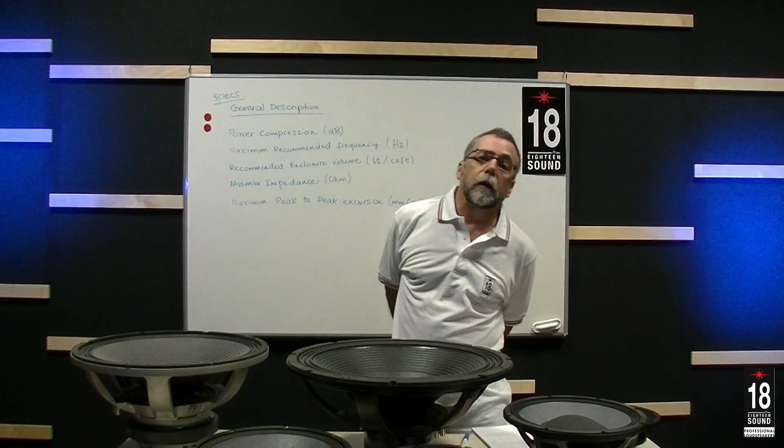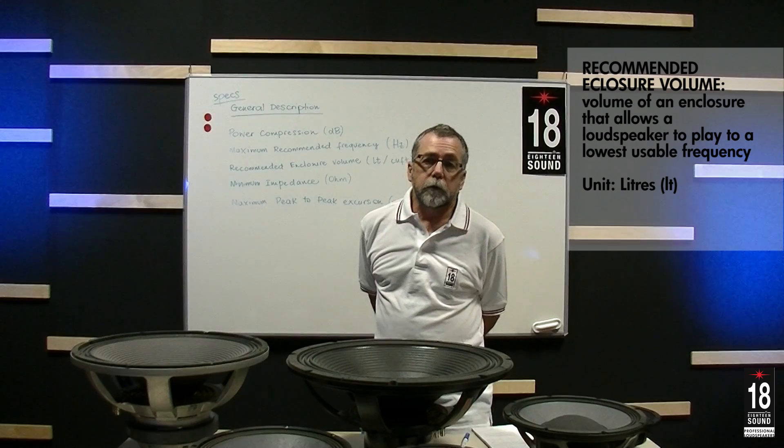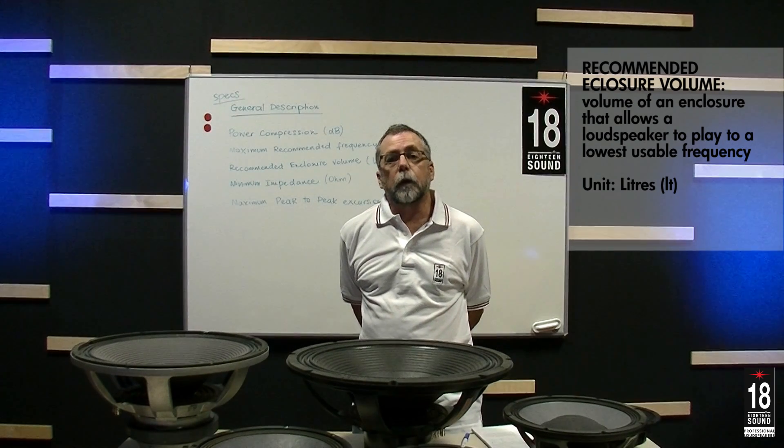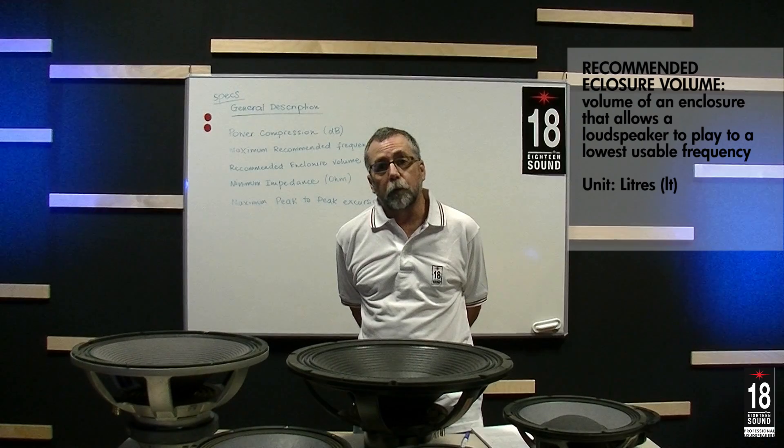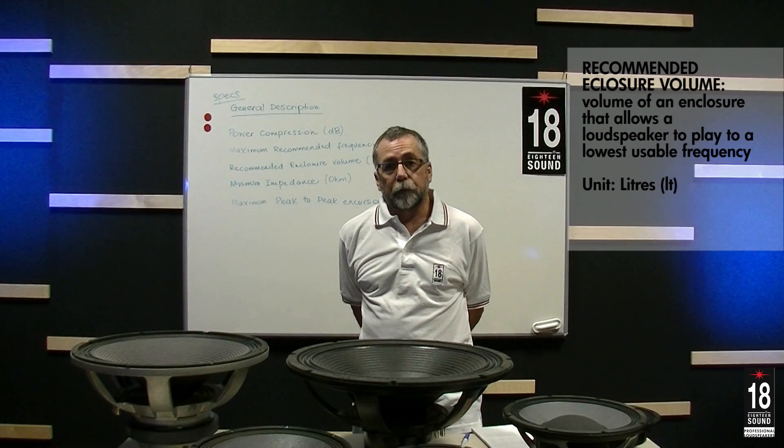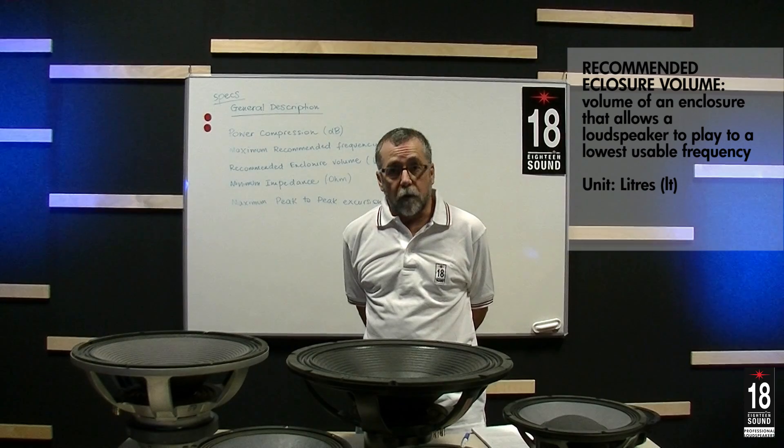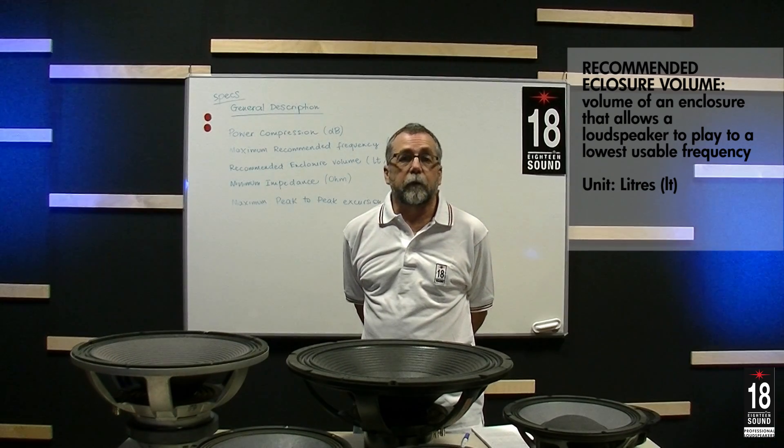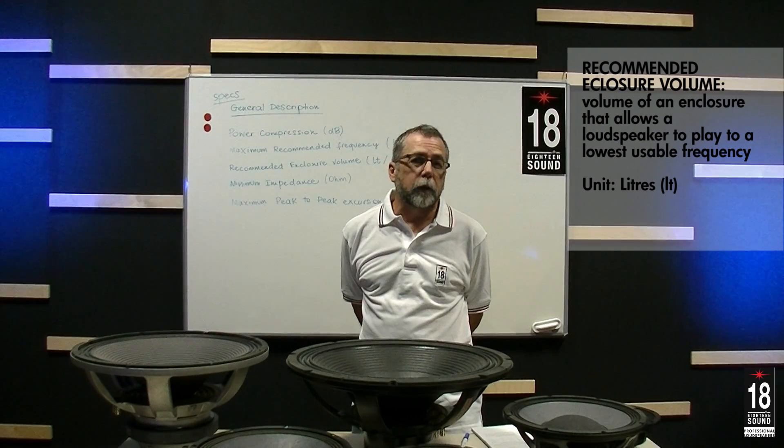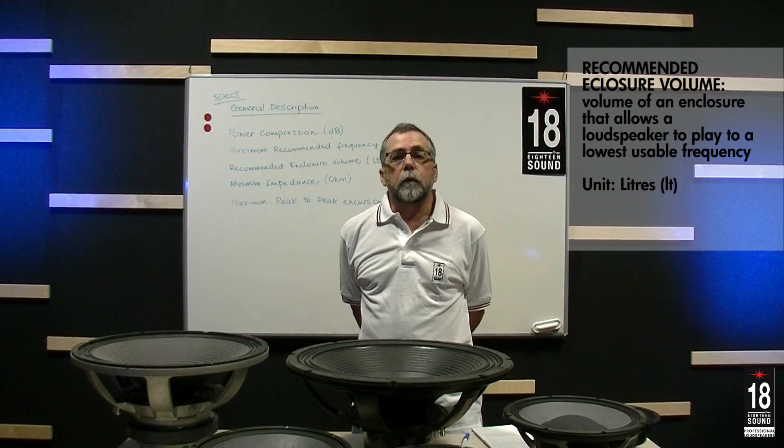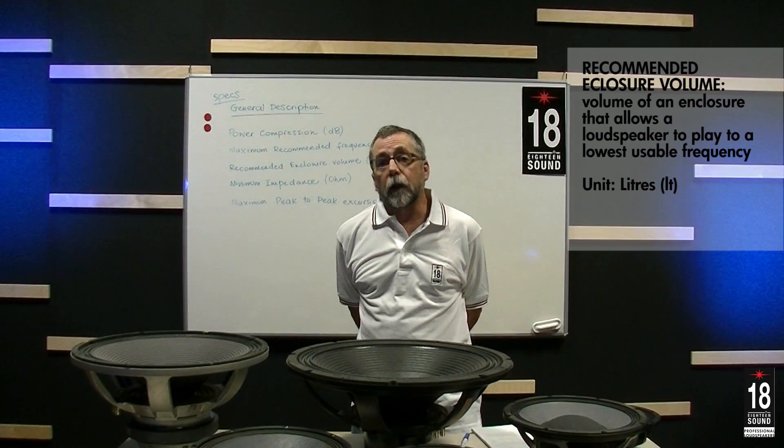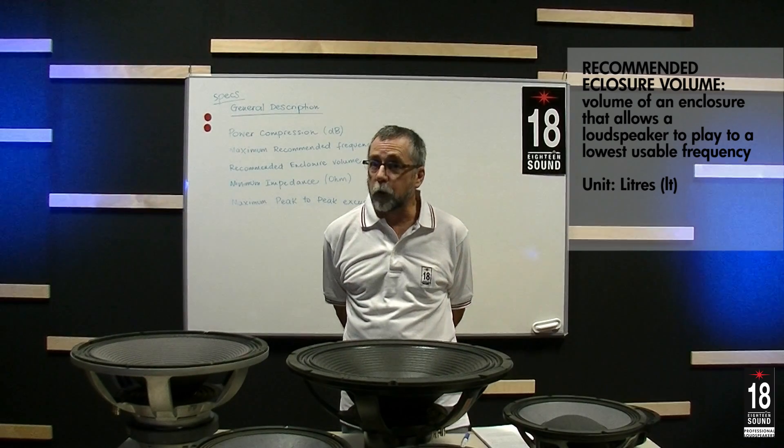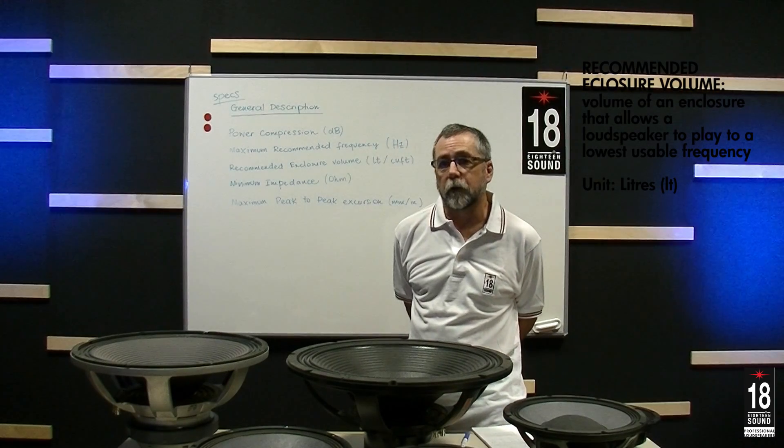Next is the recommended enclosure volume. This is related with the mechanical parameters of the loudspeaker, and we often describe them as Thiele-Small parameters. The enclosure volume is designed, or I should say it's coupled, with the loudspeaker to provide maximum output, usually in the low frequency range. The maximum volume of the loudspeaker doesn't have so much to do with the high frequency output. We will talk more about that in upcoming videos, too.